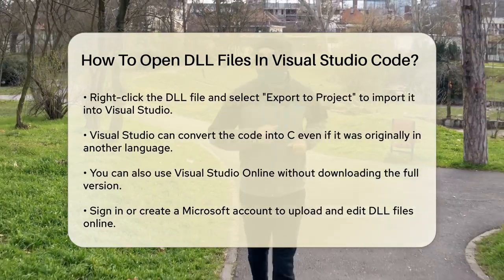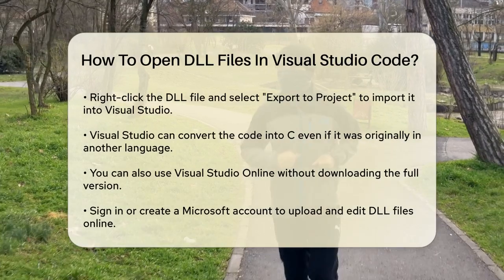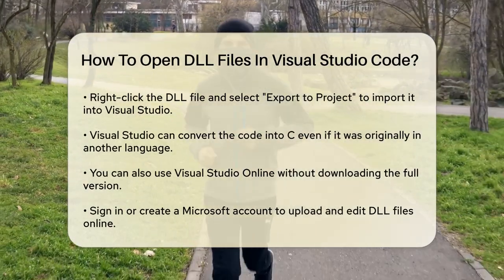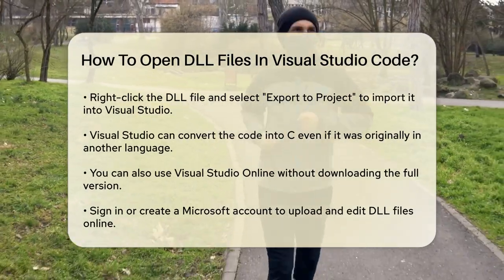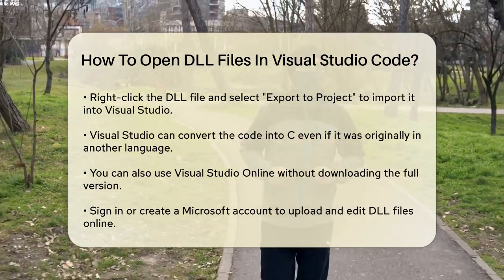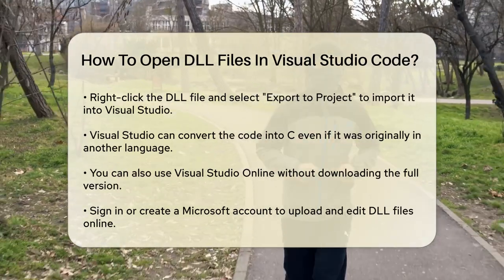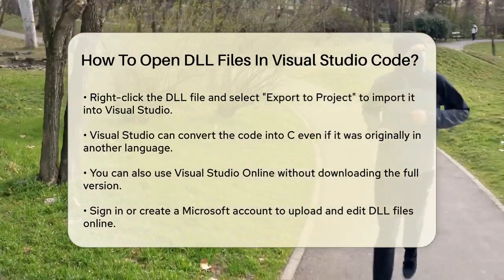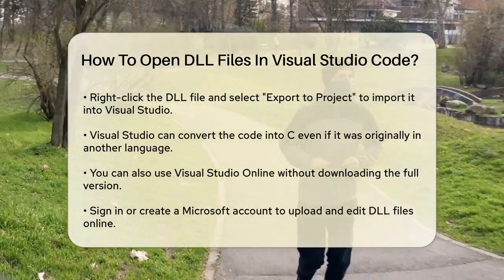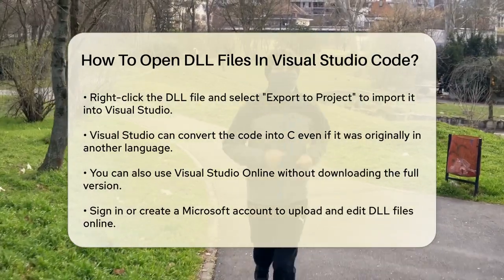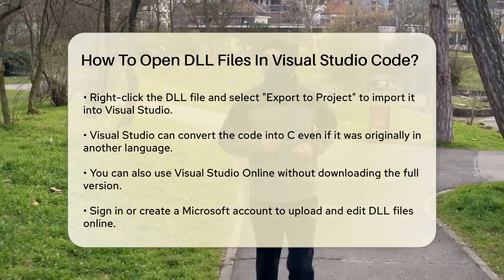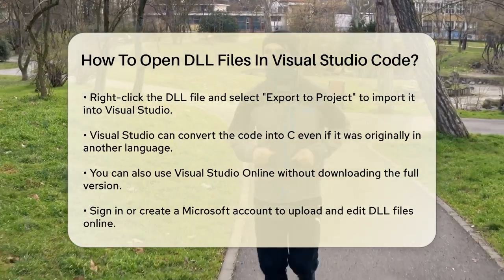Once you have Visual Studio installed, open the folder where your DLL file is located. Right-click the DLL file and select Export to Project to move it into Visual Studio. This will allow you to view and edit the code within the DLL file. Visual Studio can automatically convert the code into C#, even if it was written in a different language initially.